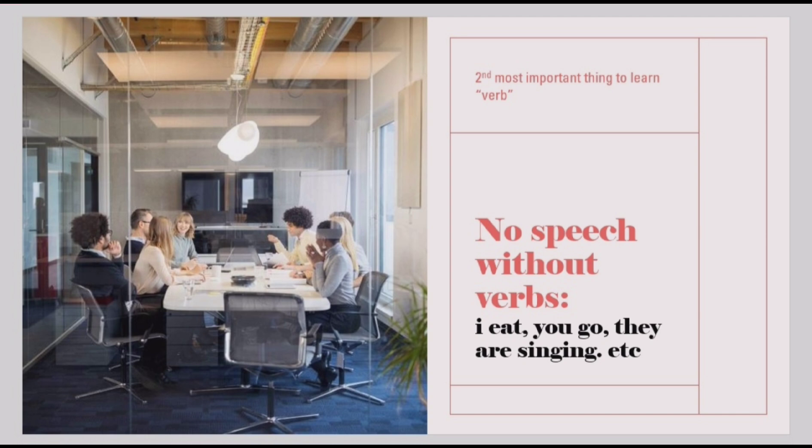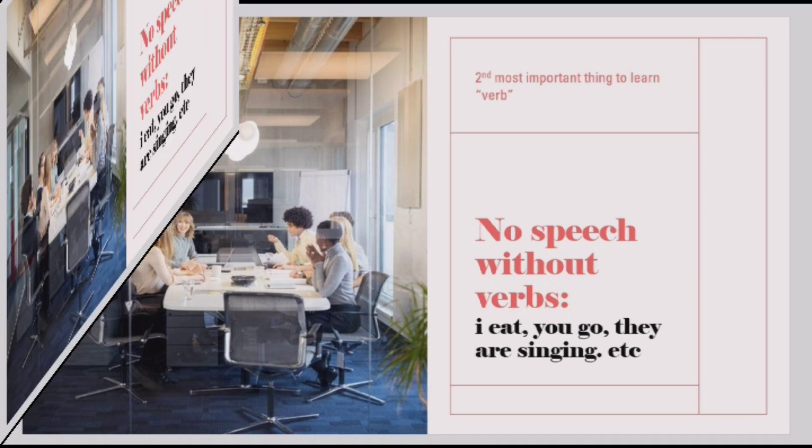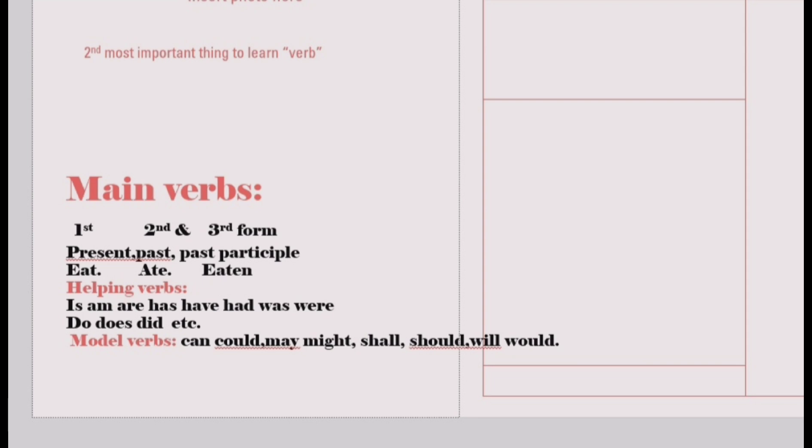Then there is another pillar of English language speaking — that is the verb. Any sentence cannot convey its meaning without a verb. There is no speech when there is no verb. For example: I go there. You come here. They live here. I am good at singing. She eats a lot. They are my friends. Whether the verbs are helping verbs or main verbs, no sentence can be made or structured without a verb. Verbs are actions — words that are performative, that describe what we do on a daily basis, what we intend to do, what our actions are.